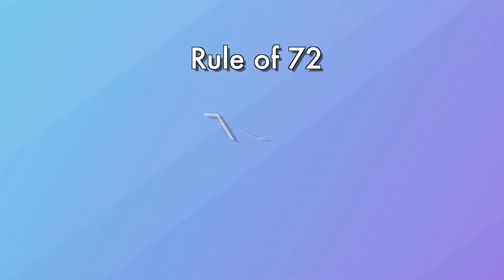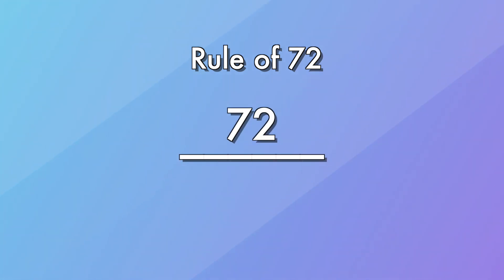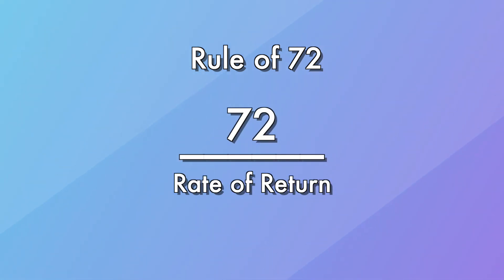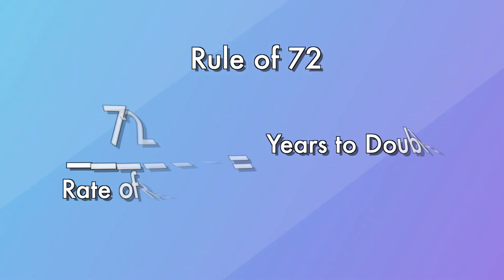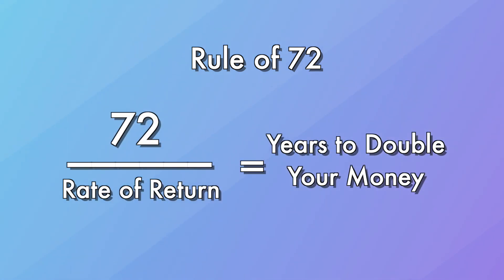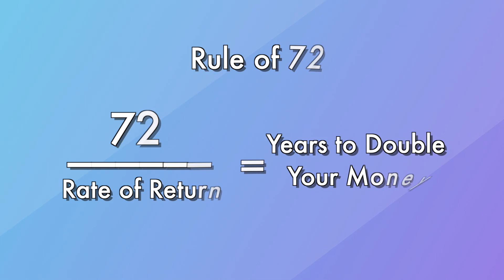To use this formula, you take the number 72 and you divide it by your rate of return. The rate of return is the same as the interest rate of whatever account you're looking at. The answer to that equation is going to be how many years it takes for your money to double in that account.